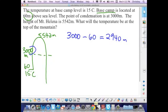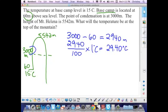We're going to take that 2,940 meters and just like before, divide by 100 and times by 1 degrees Celsius, because we haven't reached the point of condensation, so we're still operating in our dry air. Our answer here is going to be 29.40 degrees Celsius, and we will box it.